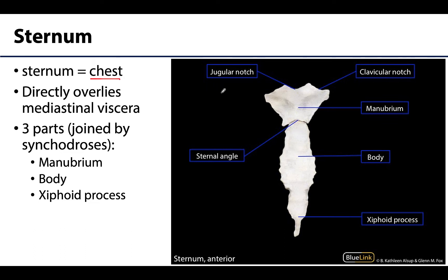Let's start anteriorly with the sternum. Sternum means chest; we often think of this as the breastbone or chest plate, and it directly overlies mediastinal viscera. Since the sternum is mostly in the midline, it's going to be covering and protecting much of the heart in particular. There will be three parts of the sternum: the most superior portion is the manubrium, or handle; the middle portion is the body, which is the longest portion.